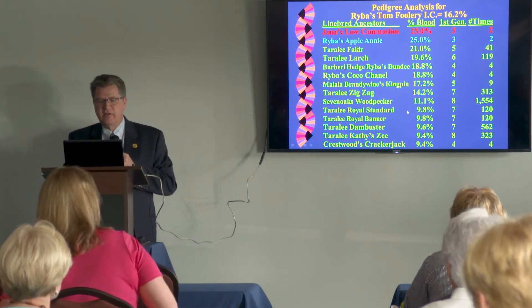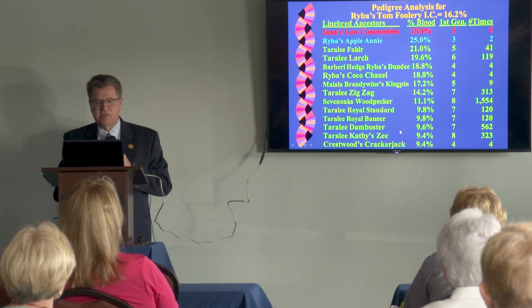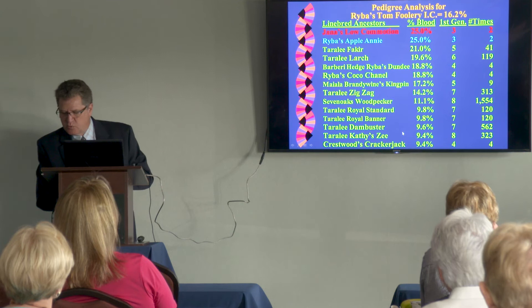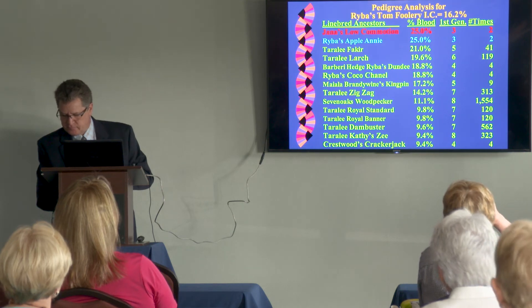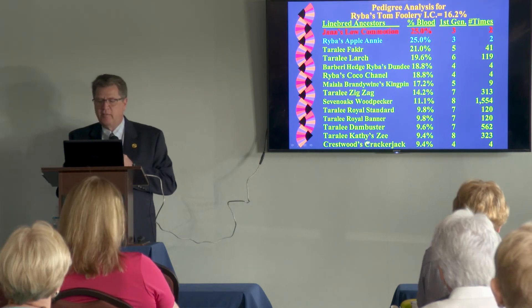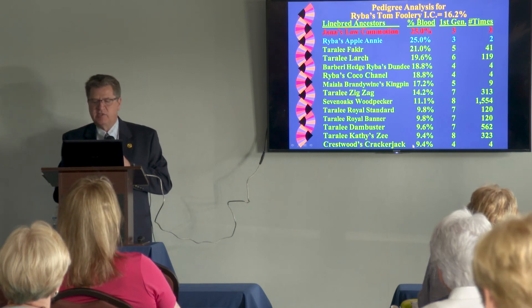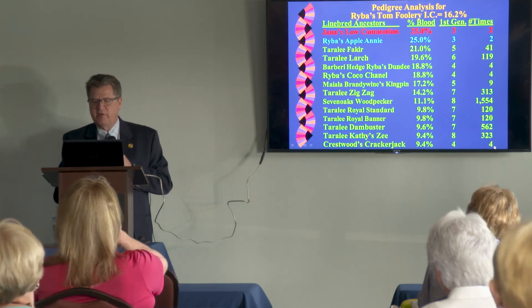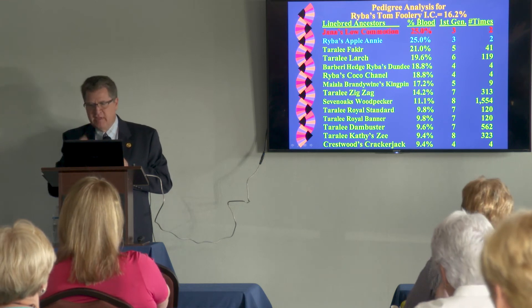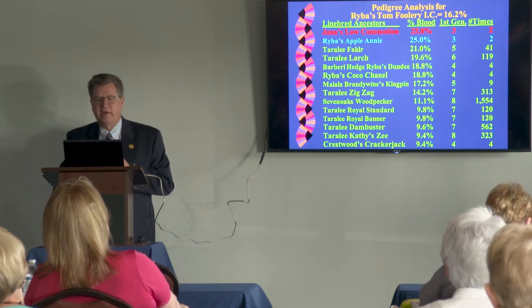Barbarie Hedge Rebus Dundee contributes 18.8%, appearing from the fourth generation four times. Taralee Zigzag contributes 17.2%, not until the seventh generation, born in 1965 — more than a great-grandparent. Sevenoaks Woodpecker doesn't appear until the eighth generation, appears 1,554 times, born in 1950 — contributing almost as much as a great-grandparent from the eighth generation. Crestwood's Cracker Jack contributes 9.4%, appearing four times from the fourth generation. This is a typical pedigree of one of your dogs.